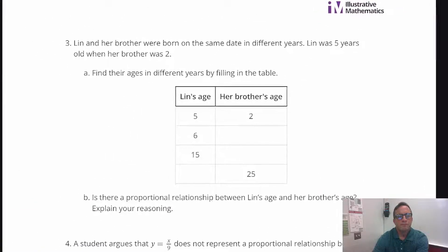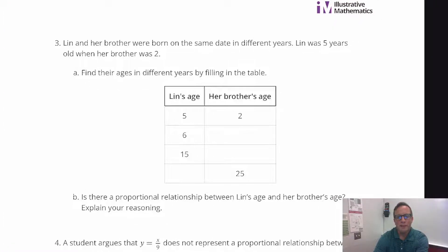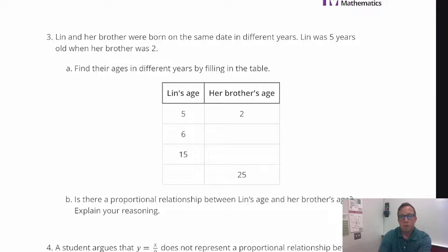Number three. Lynn and her brother were born on the same date, but in different years. Lynn was five years old when her brother was two. So find their ages in different years by filling in the table. So when Lynn was five, her brother was two. So I would assume that Lynn is always going to be three years older than her brother, always. And so this is going to be, if Lynn's six, that means her brother is three. If Lynn is 15, her brother will be 15 minus three, which is 12. And then, if we have the brother's age, we can just add three. We can add three. So 25 plus three is 28.